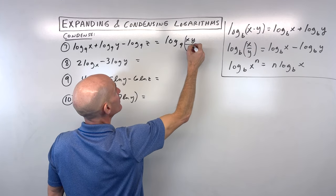Number 9: switching to natural log, ln — which is log base e. We're condensing. Bring up the coefficients as powers using the power property. When you subtract, those arguments go in the denominator; when you add, they go in the numerator. So this condenses to natural log of x to the fourth divided by y to the fifth times z to the sixth. That's fully condensed.